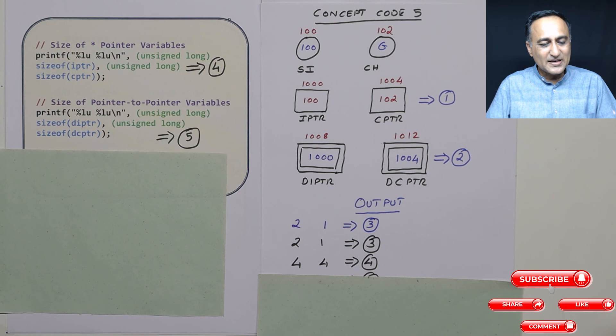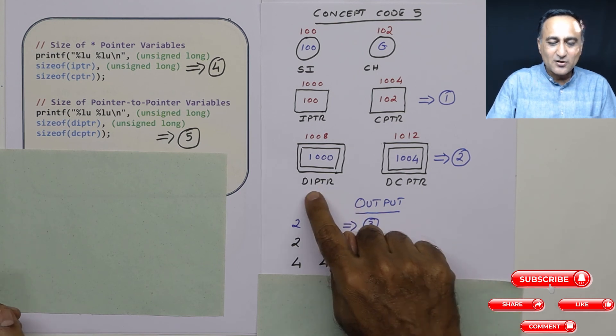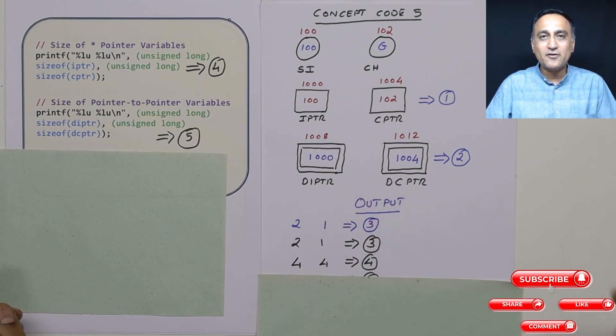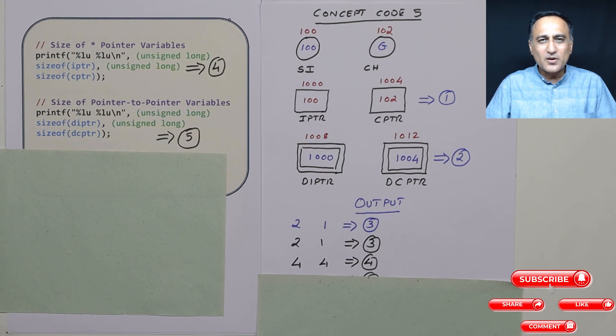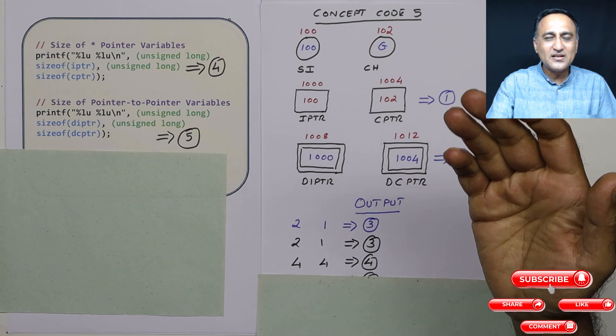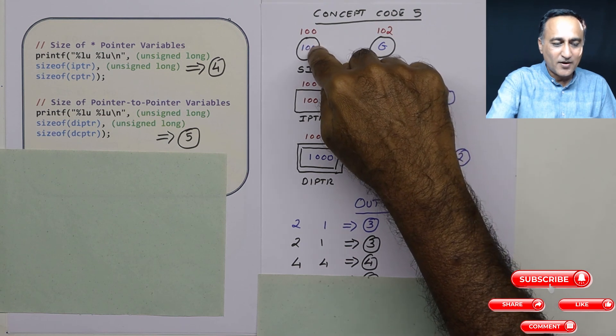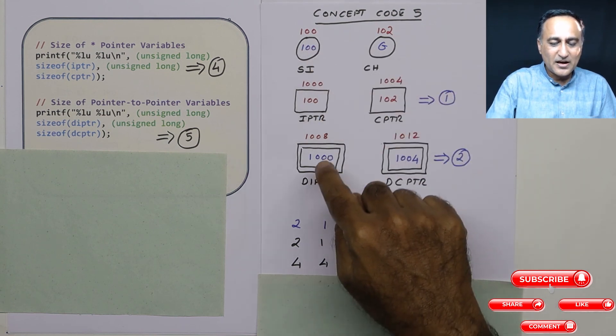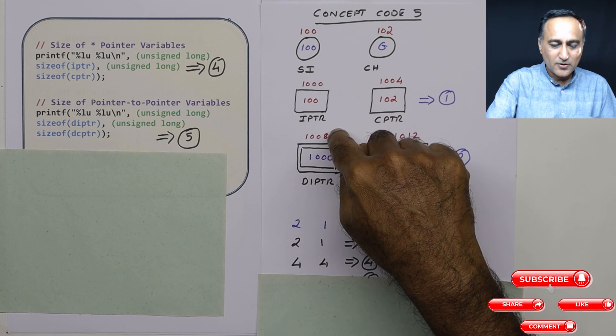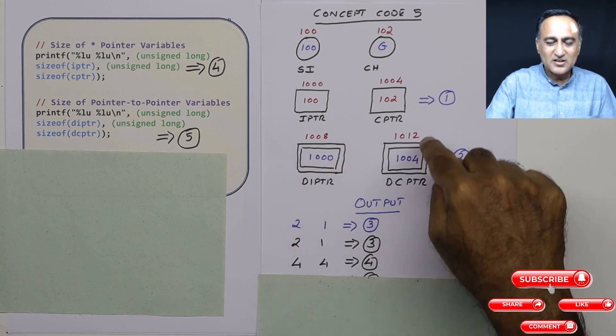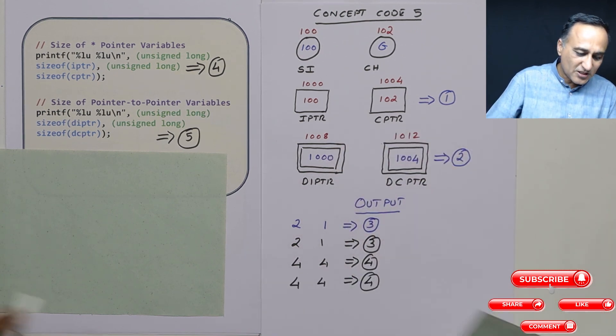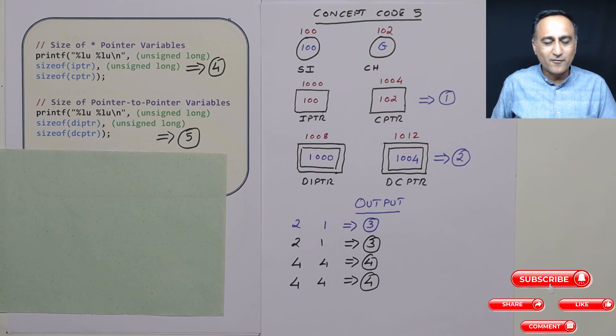Then what I am doing is in the last step I am trying to print the size of a pointer to a pointer kind of a variable. Just the words pointer to pointer should not scare you. What a pointer to pointer means, the first star will give you an address. The second star will give you the value 100. So size of di ptr is also 4. Size of dcptr is also 4. So if you are going to see the output, it's going to be 4 and 4.